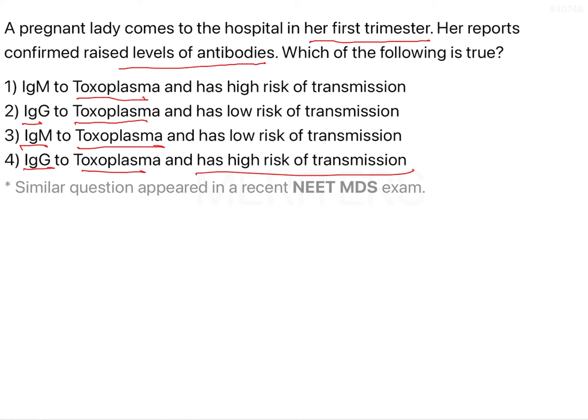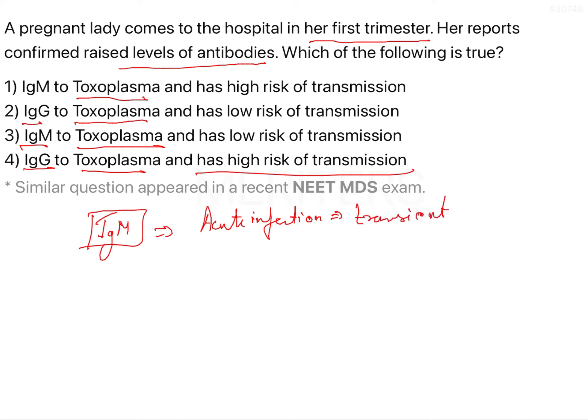First of all, we should understand this is not a question in which you should know the diagnostic values or the diagnostic test for toxoplasmosis. This question just tries to check your knowledge of different antibodies — when they appear, what kind of infection they appear in, and what they reveal. IgM is an antibody that appears in an acute infection and it is a transient antibody. It generally appears immediately after an infection and after some time it disappears.